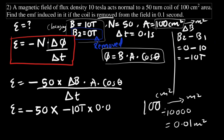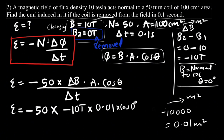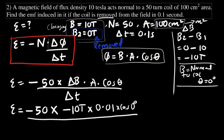So we write: EMF = −50 × (−10) × 0.01 m² × cos 0° / 0.1. Because the field acts normal to the coil, theta is 0 degrees, so cos theta equals 1. Calculating this gives the EMF as 50 volts.